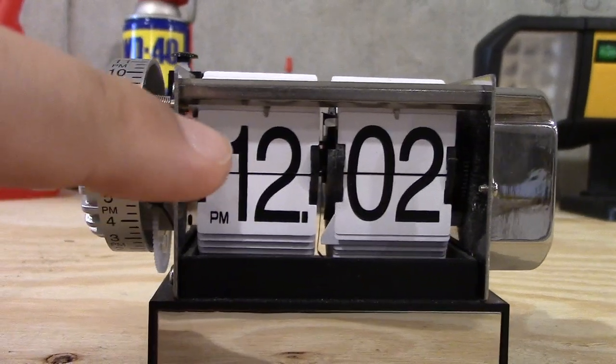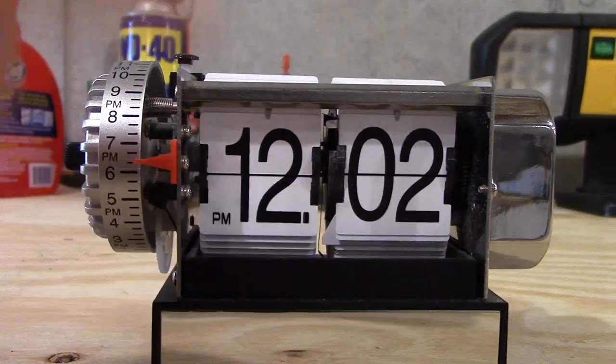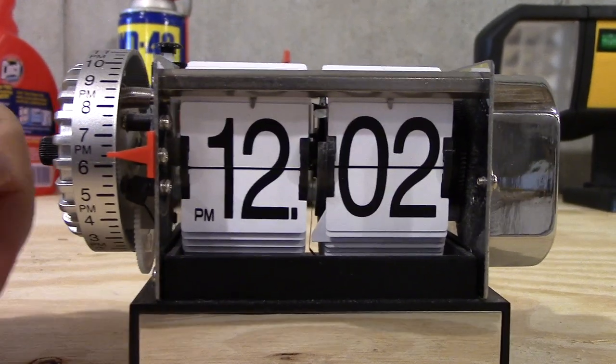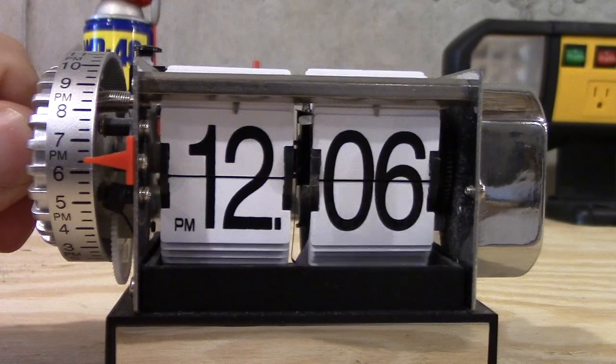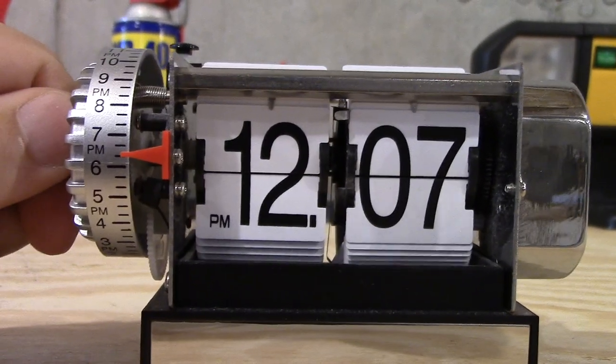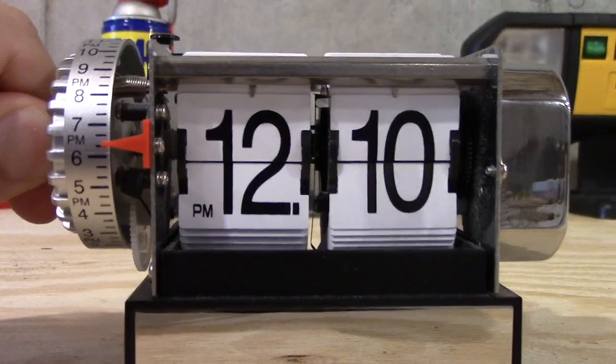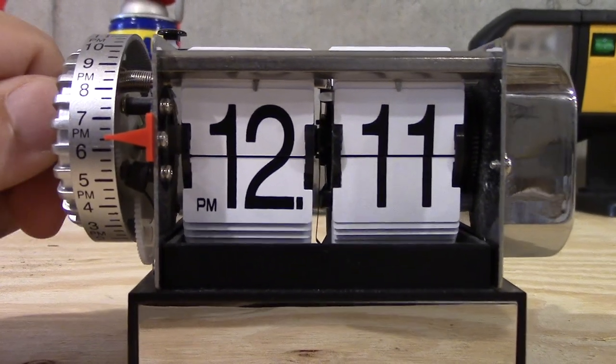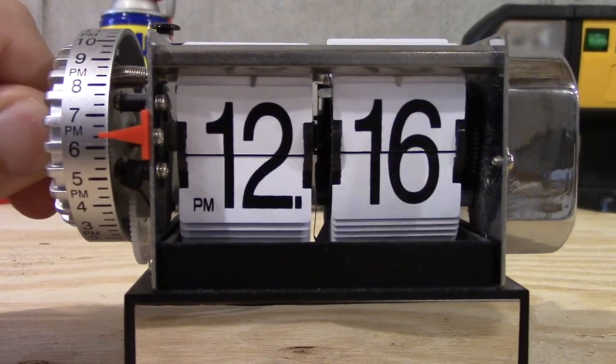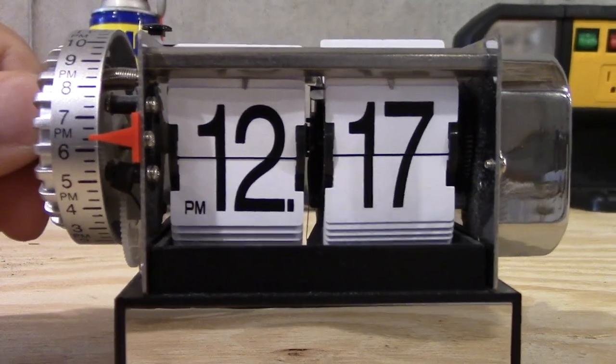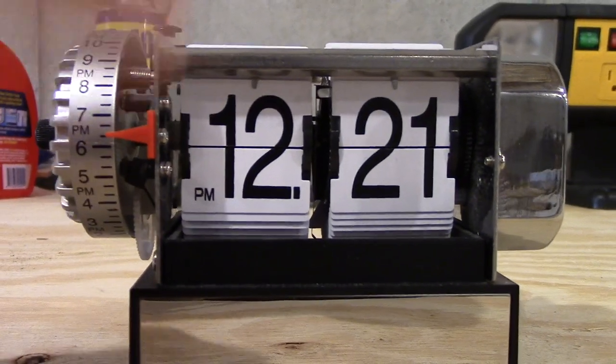Now, the hour one is actually pretty cool in how it works. Obviously, as you can see, it lowers slower than the minute one because the hours don't advance as fast. Now, if you may notice, at some point, you can see that the hour starts to get pretty close to the end of its tab. So I'm going to advance this a little bit further. See? So the hour one just flipped.